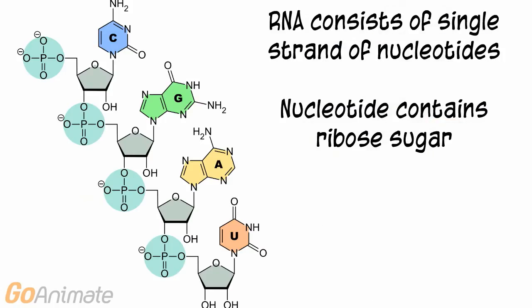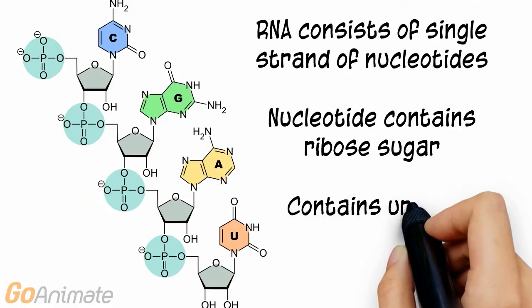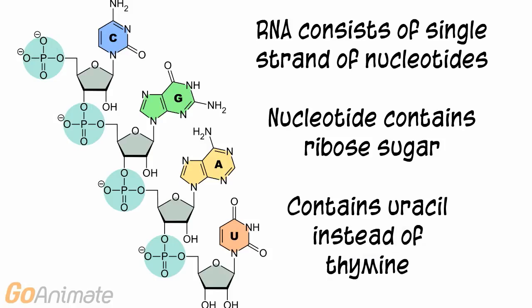RNA has a different structure. RNA consists of a single strand of nucleotides. The nucleotides in RNA contain a ribose sugar. RNA has a different base as well — RNA contains uracil instead of thymine.